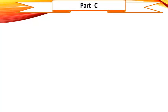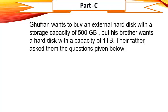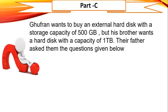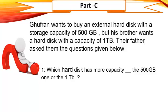Now we will discuss the last part of this section, that is part C. A boy named Guffron wants to buy an external hard disk with a storage capacity of 500 gigabytes, but his brother wants a hard disk with a capacity of 1 terabyte. Their father asked them: which hard disk has more capacity — the 500 gigabytes one or the 1 terabyte one? The clue for the answer can be found in the table given in the topic binary digits, which we discussed in week 5.